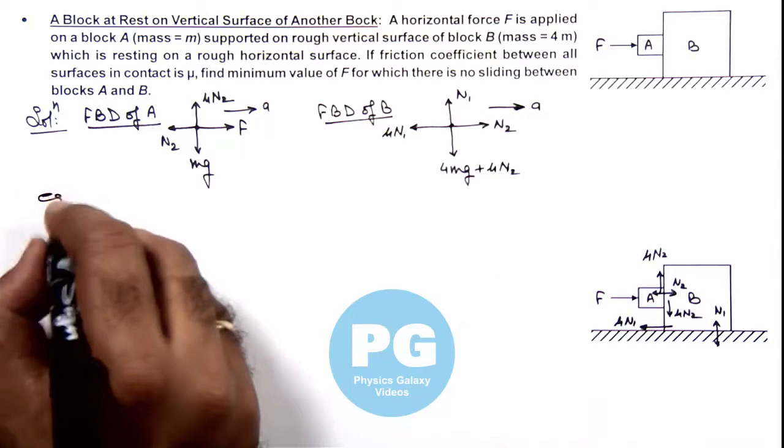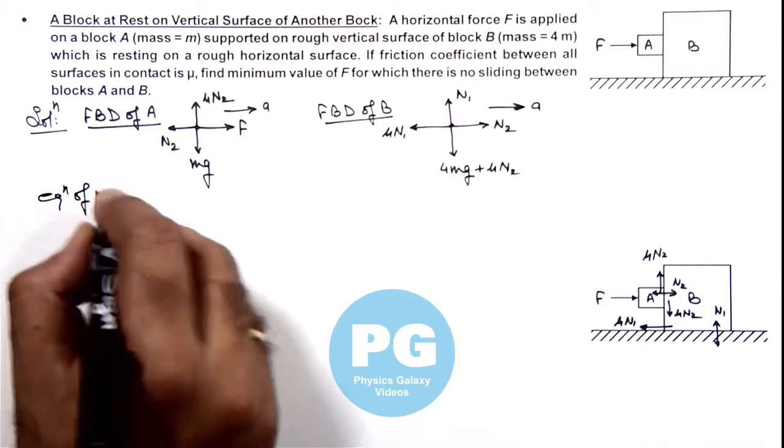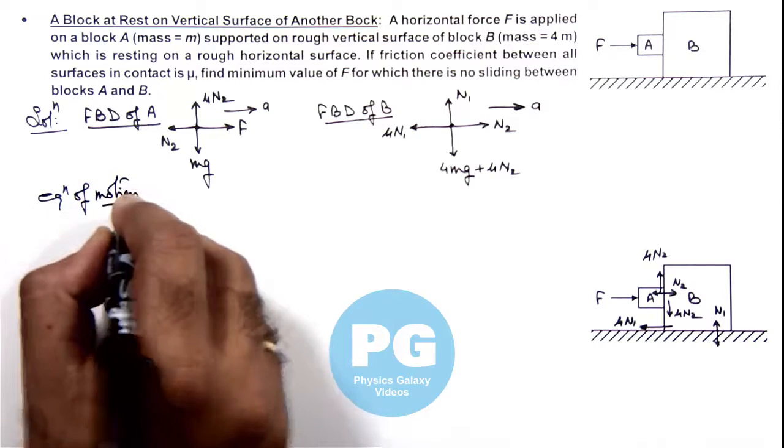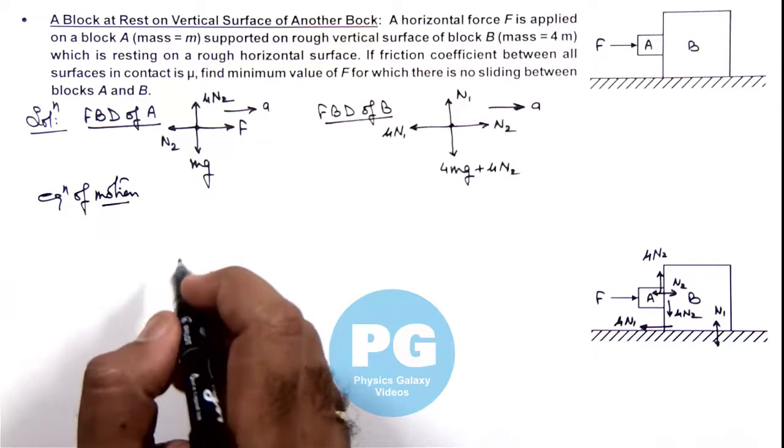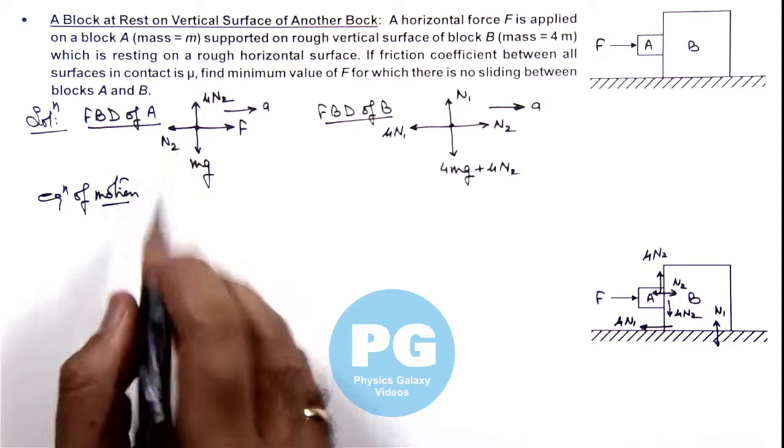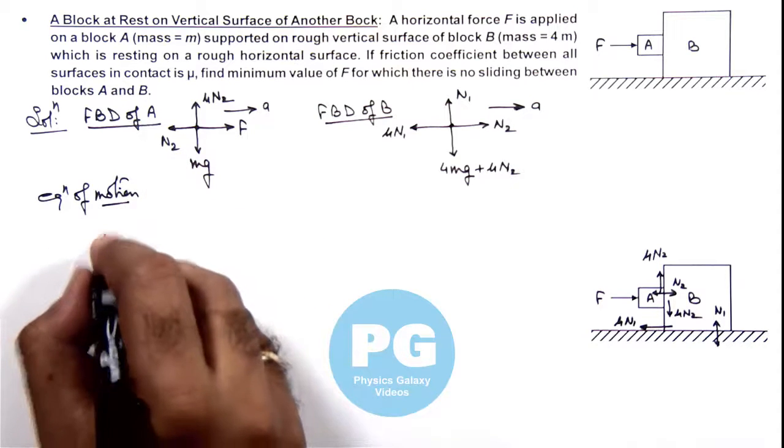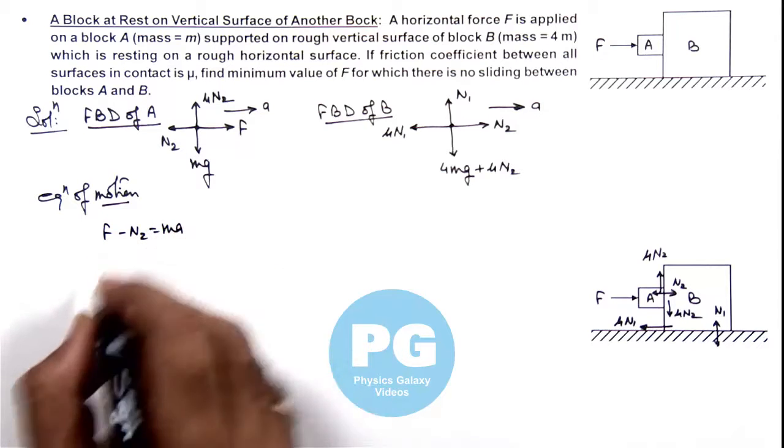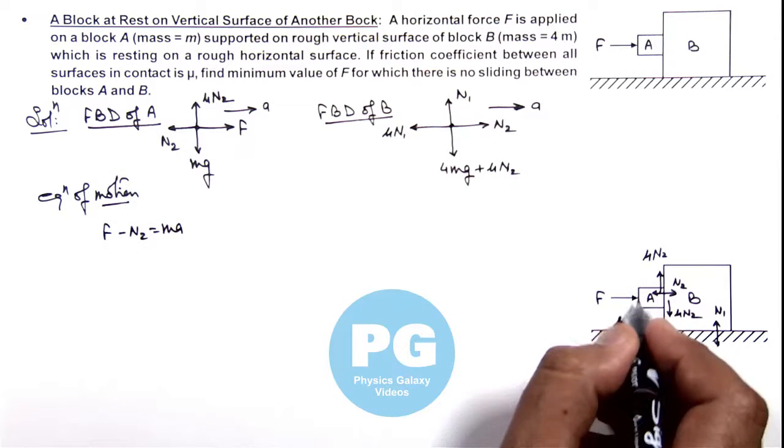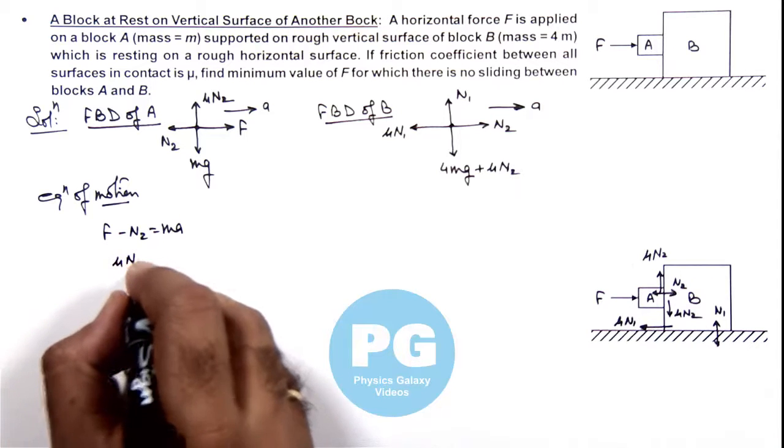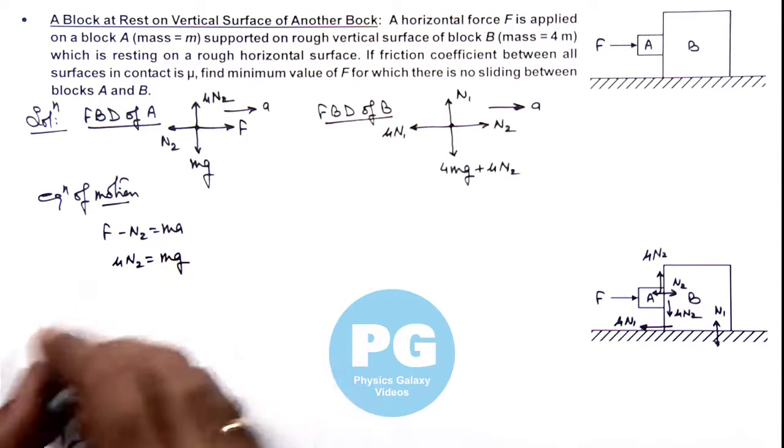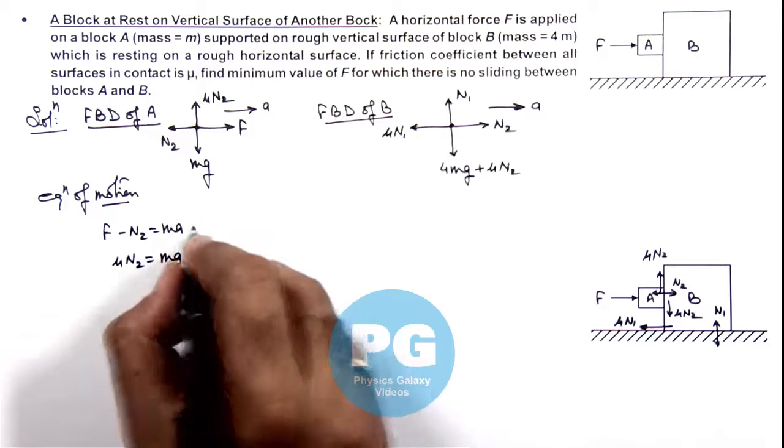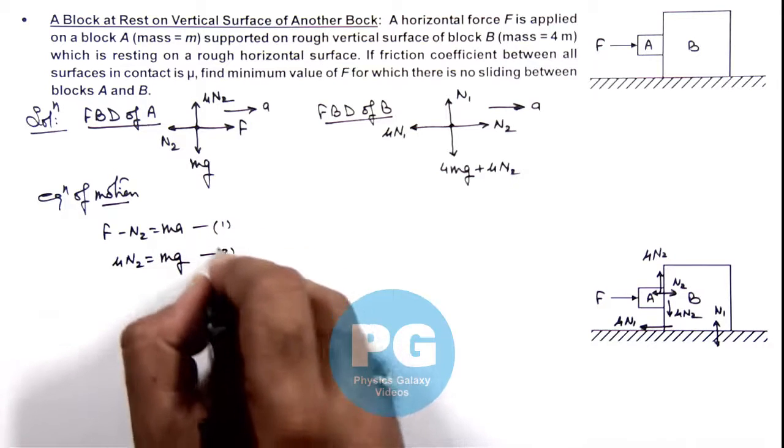So if we write the equations of motion for these blocks, here you can see we can write for block A: F - N₂ = ma. In vertical direction A is not sliding so we can write μN₂ = mg. Say this is our first equation, this is the second equation.